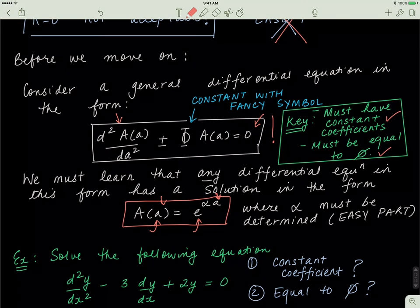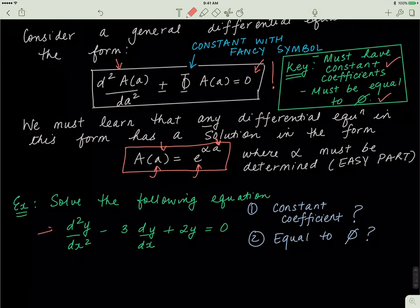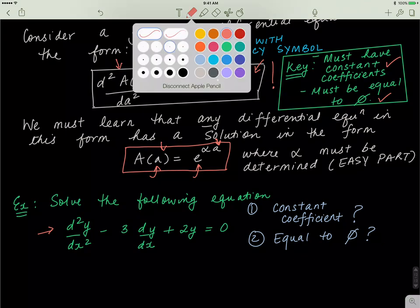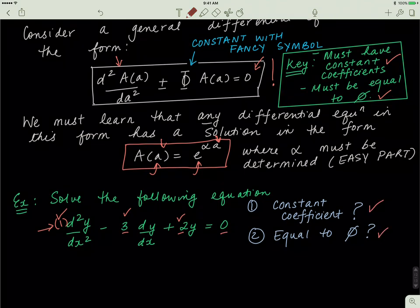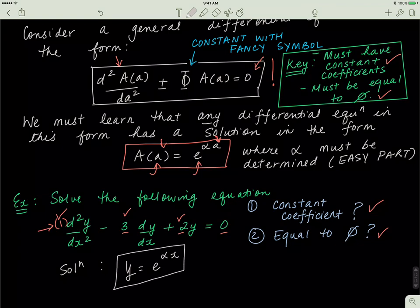Let's understand this with an example. Say we have the differential equation d²y/dx² + 3(dy/dx) + 2y = 0. First, does it have constant coefficients? The coefficients are 1, 3, and 2 — all constants. Second, is it equal to zero? Yes. So the solution is in the form y = e^(αx), and we proceed from there to determine α.